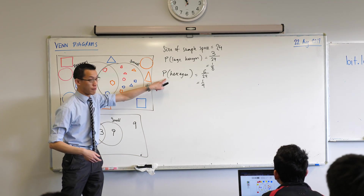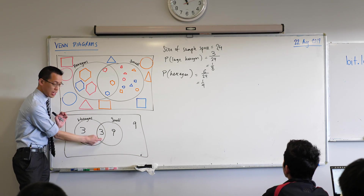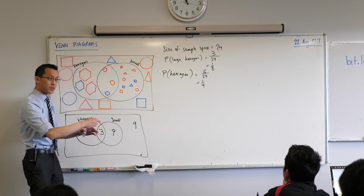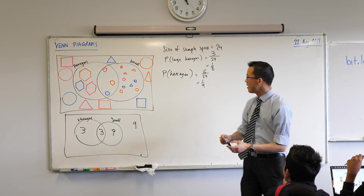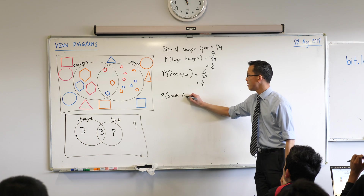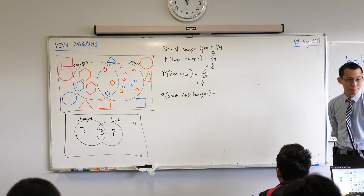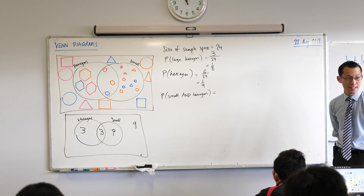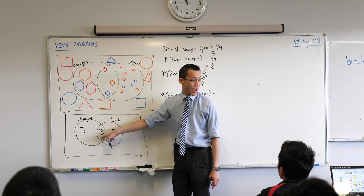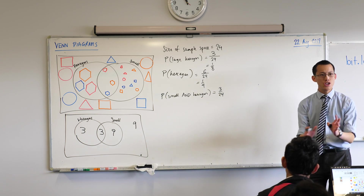We said large hexagons and then regular hexagons — so the overlapping area in the middle contains the small hexagons. The probability of small AND hexagon: shapes that are both small and a hexagon. There are three in that middle region, so that's 3/24.